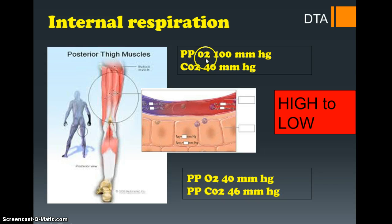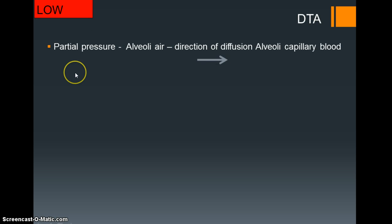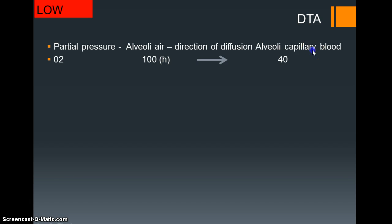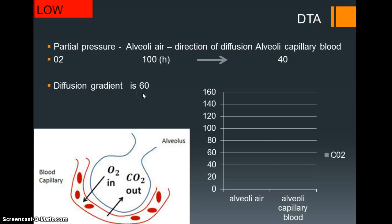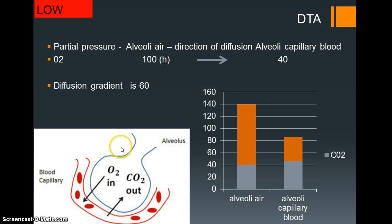The same values apply at the working tissues: O2 is 100 in the capillaries and only 40 in the muscle tissue, giving a diffusion gradient of 60. Looking at the chart, where we have CO2 and O2 in the alveoli air versus the alveoli capillaries - there is a larger amount of O2 in the alveoli air so it diffuses across, and there's a slight increase in CO2 in the alveoli capillary blood so that diffuses across the other way. Within the capillaries we have a high concentration of O2 and it diffuses from high to low.